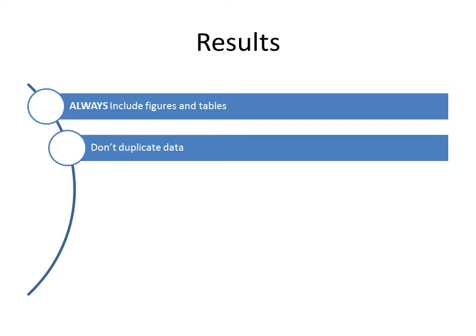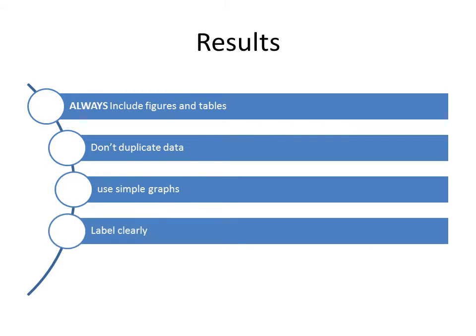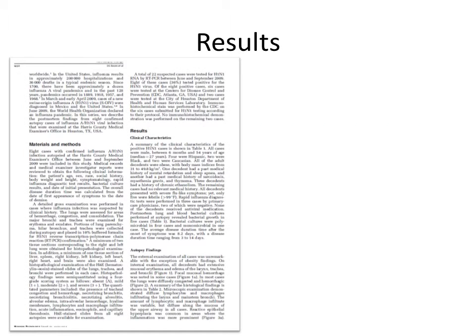If the table includes the results of a statistical analysis, be sure to provide the information necessary for the reader to properly evaluate the analysis of the data — for example, the sample size. Use very simple graphs. Don't complicate the reading. Label them very clearly. Always show pictures and tables in the order that they were presented and described in the text. Don't make the reader jump from one picture or table to the next without having the same flow in the text. Here is an example of a case report where we decided to show under the results the patient's characteristics followed by the autopsy findings.